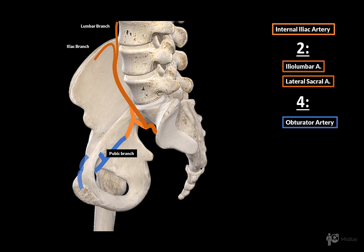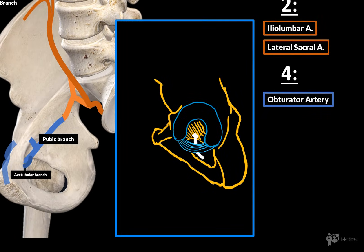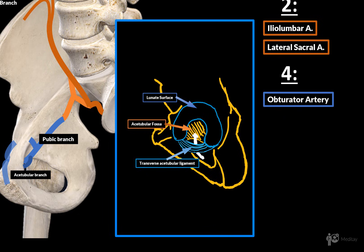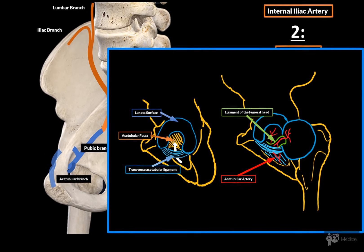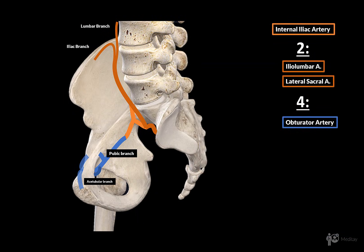The other branch is the acetabular branch. Looking at the acetabular fossa, with the lunate surface and the transverse acetabular ligament forming a complete circle, the acetabular branch of the obturator artery passes under the transverse acetabular ligament. It runs inside the ligament of the femoral head to supply the caput femoris.